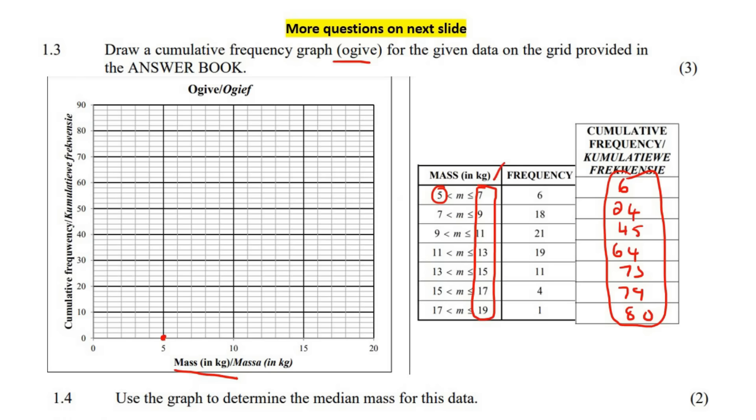So we put a little dot there. Now we go to 7, so 7 goes with 6. So 7 on the x-axis, and then 6 on the y-axis. So that's going to be there. Then we're going to do 9 and 24. So 9 on the x-axis, and then 24 on the y-axis. That'll be there. And then 11 and 45. So that'll be like that. And then 13 and 64. So 13 on the x-axis and then 64 on the y. 15 and then 75. And then 17 and 79. And then 19 and 80.